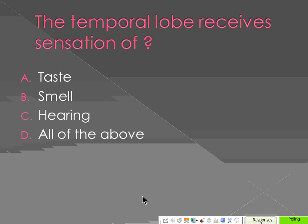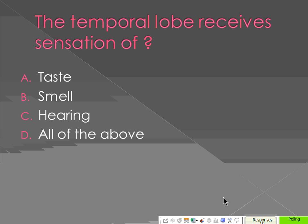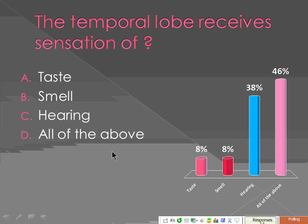For a review: the temporal lobe receives smell and hearing. Taste goes to the parietal lobe and the insula. The tympanic membrane separates the middle ear from the external ear — not from the internal ear, which is separated by bone and the two windows.